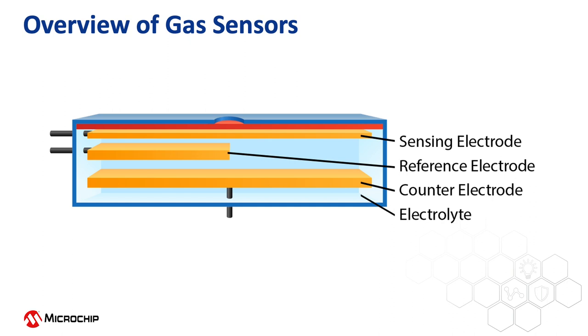Both two and three terminal electrochemical gas sensors are in use today. A three terminal gas sensor is shown here, consisting of a sensing electrode, a reference electrode, and a counter electrode. A two terminal sensor functions the same way but does not have a reference electrode.